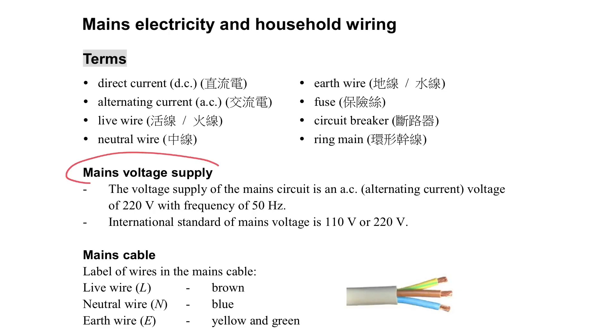Main electricity and household wiring. Firstly, the main voltage supply. In Hong Kong we're using alternating current with 220 volts. The international standard is usually two values, either 110 or 220. In Hong Kong we're using 220 volts. The frequency is not important.